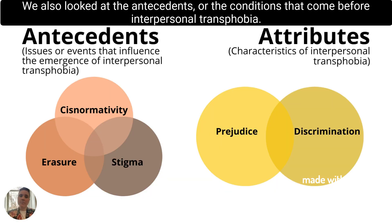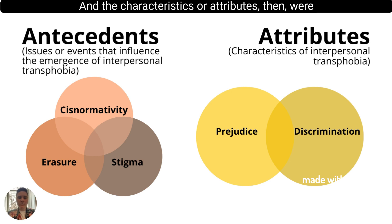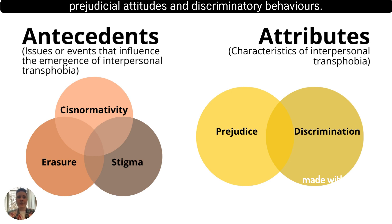Ultimately, we need to believe trans voices and experiences. We also looked at the antecedents, or the conditions that come before interpersonal transphobia — these are more systems-level things such as cis-normativity, erasure, and stigma. The characteristics or attributes are then prejudicial attitudes and discriminatory behaviors.